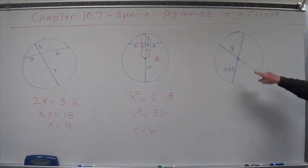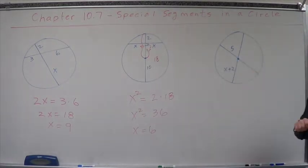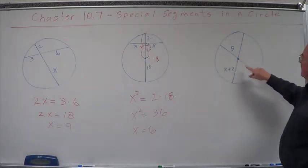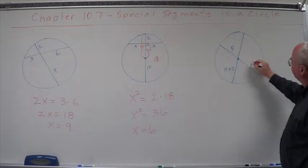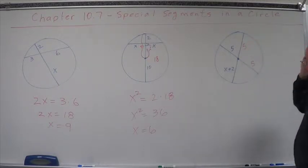Now this right here, anytime you've got this center right there, we know we've got radius diameters going on, radii diameters going on. So if this is 5, this must be 5. And this must be 5.